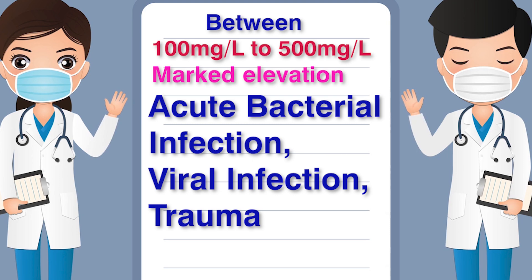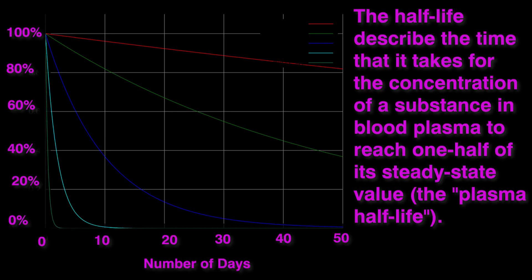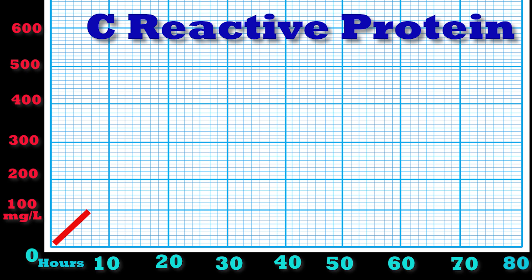Between 100 mg/L to 500 mg/L is called marked elevation, seen in people with acute bacterial infection, viral infection, or trauma. Above 500 mg/L is a severe elevation seen in bacterial infections. The plasma half-life of C-reactive protein is 19 hours and is constant across all medical conditions.